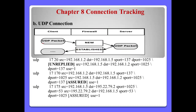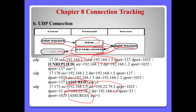UDP is very simple. If the client sends a packet to the server, we say this state is 'New'. If the UDP server also replies to the client, we say this state is 'Established'. In this case, the source address means the client and the destination means the server. After the destination replies to the source address, we can say the state is assured.